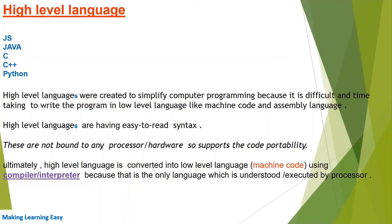Ultimately, whichever language we use at the moment, all are converted into machine code, because the processor or CPU only understands machine code. So high level language is also converted into machine code whenever we compile or interpret it. For example, when we write a C program we compile it.